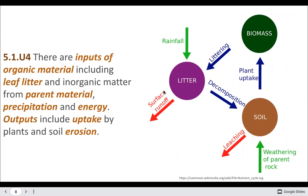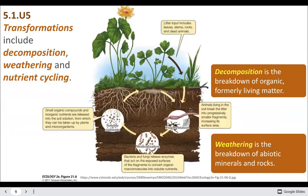Inputs of organic matter include leaf litter or detritus, and inorganic matter from parent material (bedrock), precipitation, and energy. Outputs include uptake by plants and soil erosion. Transformations in the soil include decomposition — breaking down detritus into component nutrients — and weathering, which breaks down parent rock into smaller particles or different substances. For example, limestone dissolves in slightly acidic rain, breaking carbonate bonds and releasing CO2 bubbles — a handy field test for geologists. And then nutrient cycling, as different organisms help move materials around.